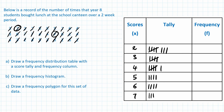Now we just need to transfer the tally onto frequency. Two came out 8 times — write 8. Three came out 5 times — write 5. Four is 6. Five is 4. Six is 4. Seven is 3.